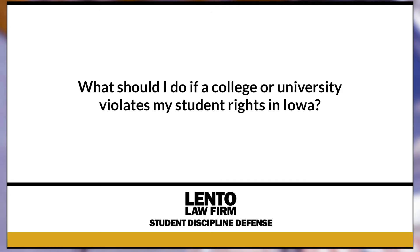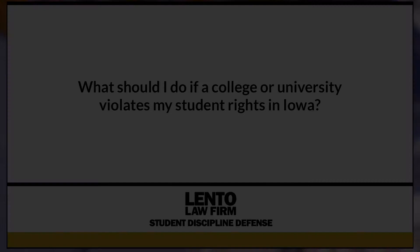What should I do? College students in Iowa have various rights under federal and state laws. When a college or university in Iowa violates a student's rights, there are recourses. Some of the most common violations of students' rights are under Title 6 discrimination in education, Title 7 employment discrimination, Title 9 sex discrimination, and under the Americans with Disabilities Act — the ADA — reasonable accommodations for documented medical needs.